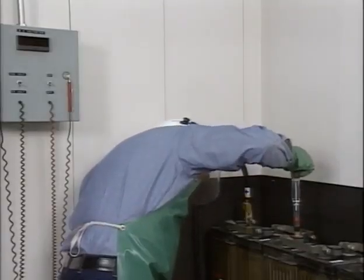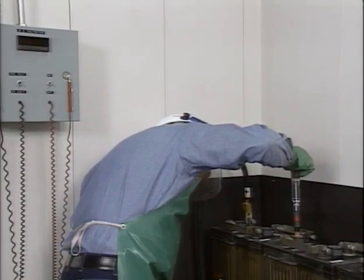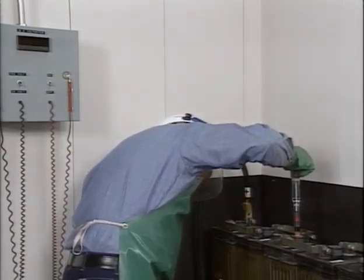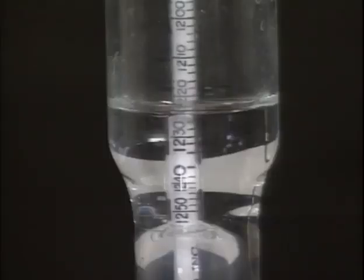Once the float steadies, the specific gravity is read off the scale at the surface of the electrolyte. The specific gravity reading here is 1.222. This is not necessarily the value that's recorded.